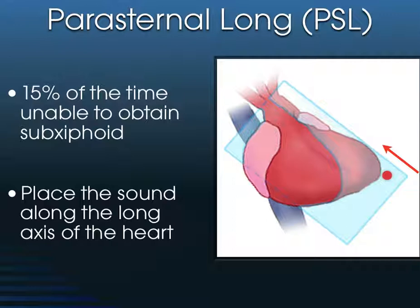About 15% of the time, because some patients have small livers or other issues, it's really difficult to obtain a sub-xiphoid view. So it's good to know some other tricks up your sleeve, such as the parasternal long axis.